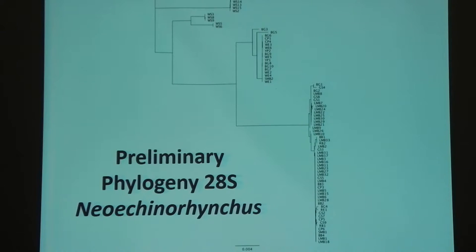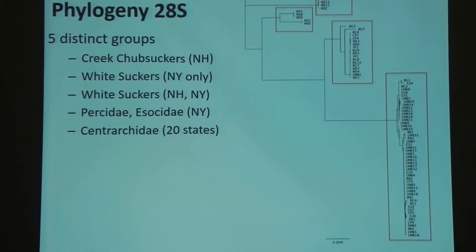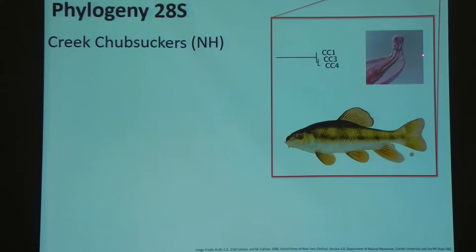Luckily, yes we did find something. As you can see in this phylogeny — don't get bogged down by each little label, but each label represents one worm from one host. What we see, looking for trends in this preliminary data, is five groups settling out, and they're really settling out by host group and less by geography. We have a sample for this first group — a small sample size from our targeted few days of sampling in New Hampshire — but we did get the creek chub sucker, the type host for that one species we went to New Hampshire for. Creek chub suckers in New Hampshire give us one group that's the most genetically divergent from all other parasite groups we've found so far.